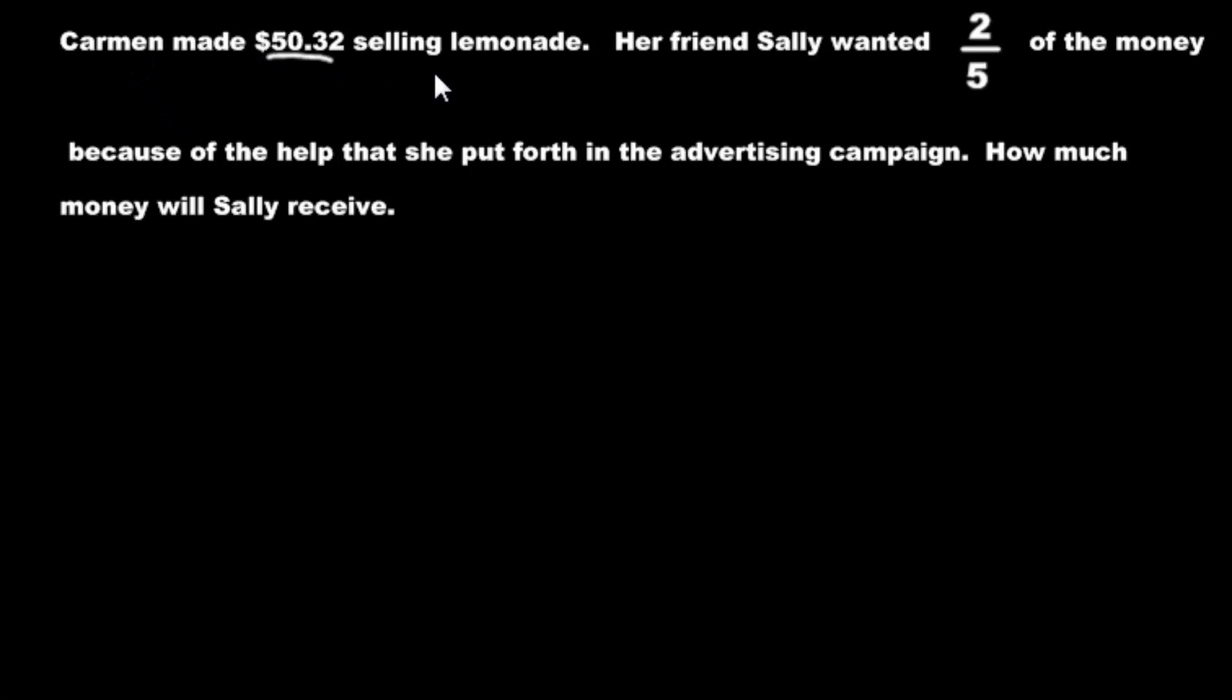Here's Carmen. She made this much money selling lemonade. It's pretty good money for selling lemonade. I never made that much money ever selling lemonade. Our bake sales don't make that much money selling lemonade. She's pretty good at this. Ah, but maybe she's got some help. I think that's coming up. Her friend Sally wants 2/5 of the money because of the help that she put forth in the advertising campaign. She's a great marketer. How much money will Sally receive? What are we doing here? Multiplication, division, what's going on? You see this? 2/5 of the money. You see the word of how it's being used? We have a number here. We have the word of and we have a number here. We know the money is $50.32. We have two numbers and in between them is the word of. That's when you know the word of means multiply. You see that?